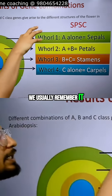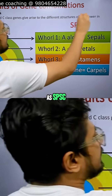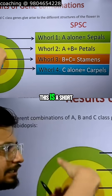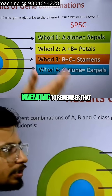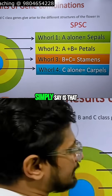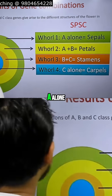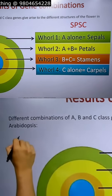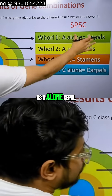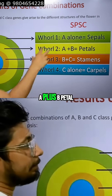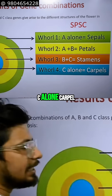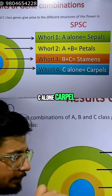We usually remember it as SPSC — that is the short mnemonic to remember. Simply put: A alone gives sepal, A plus B gives petal, B plus C gives stamen, and C alone gives carpel.